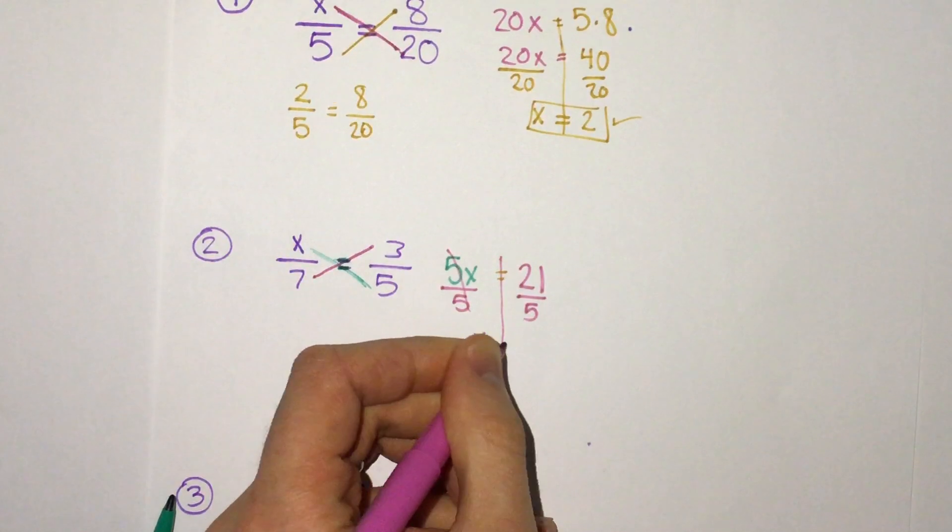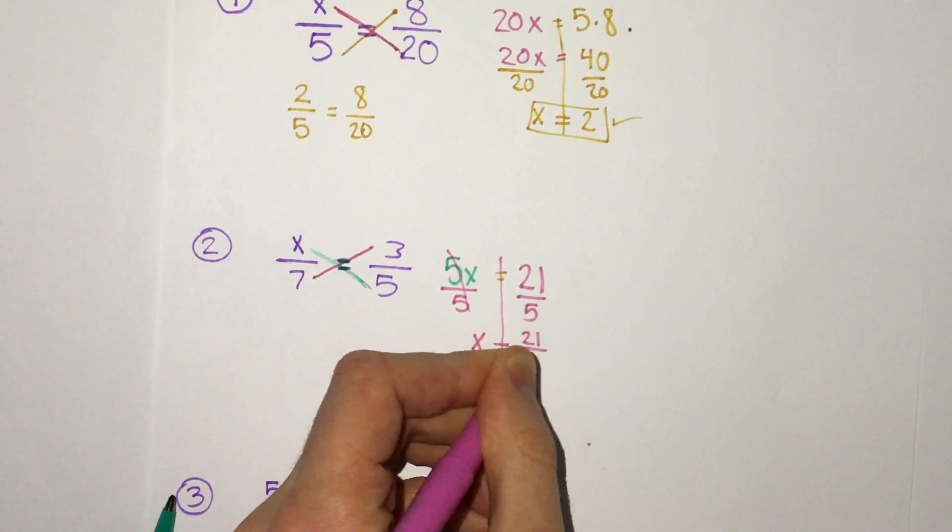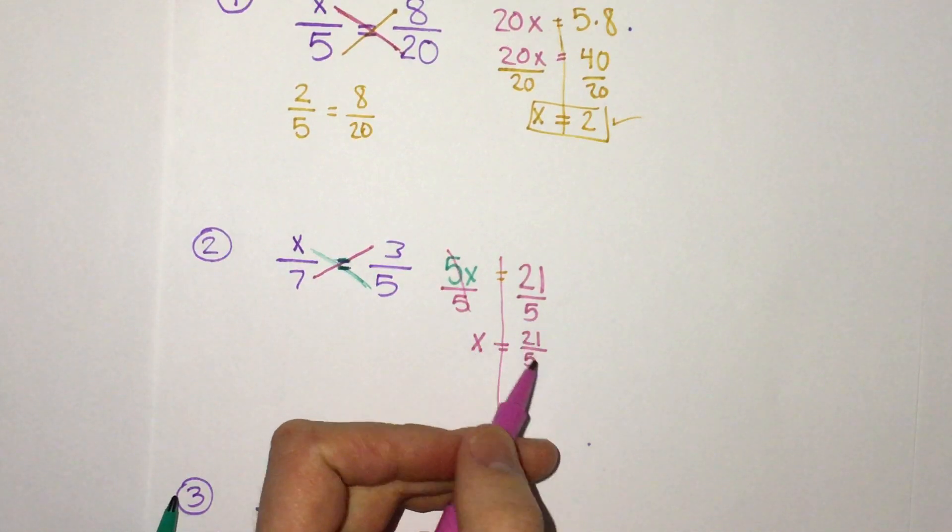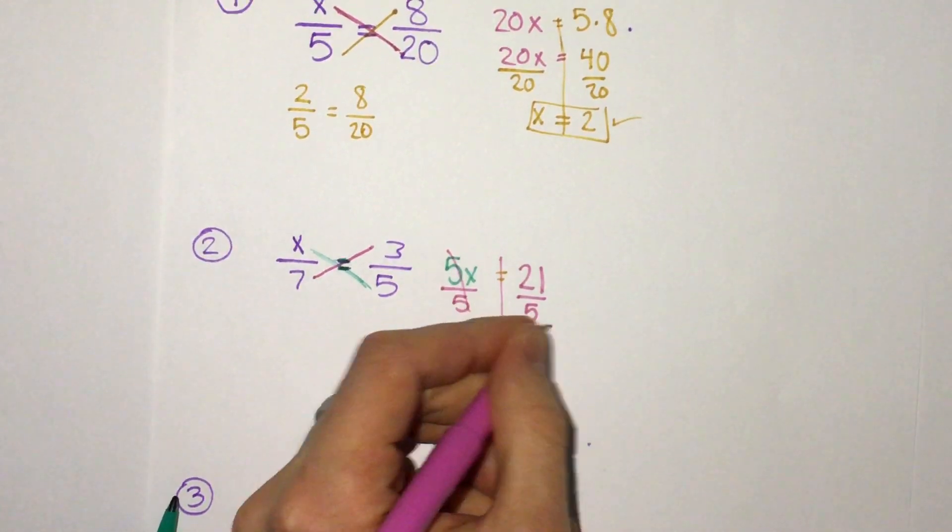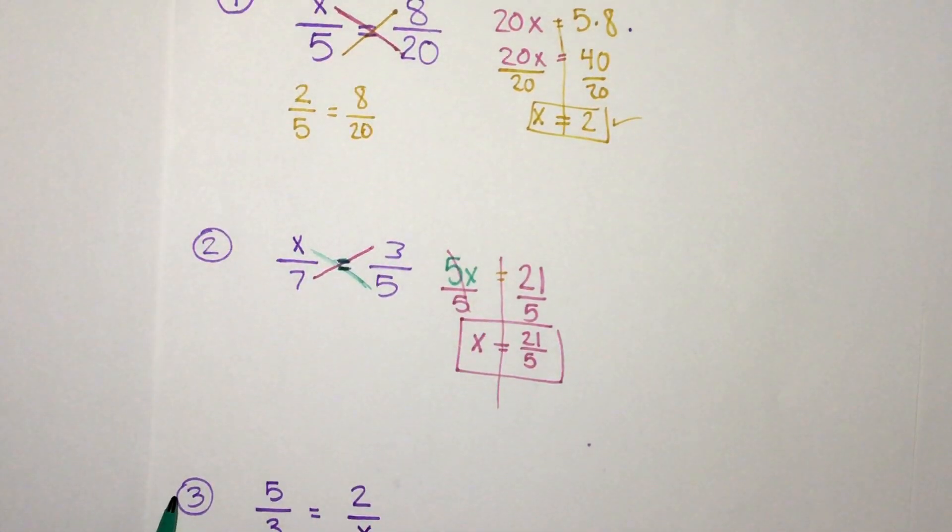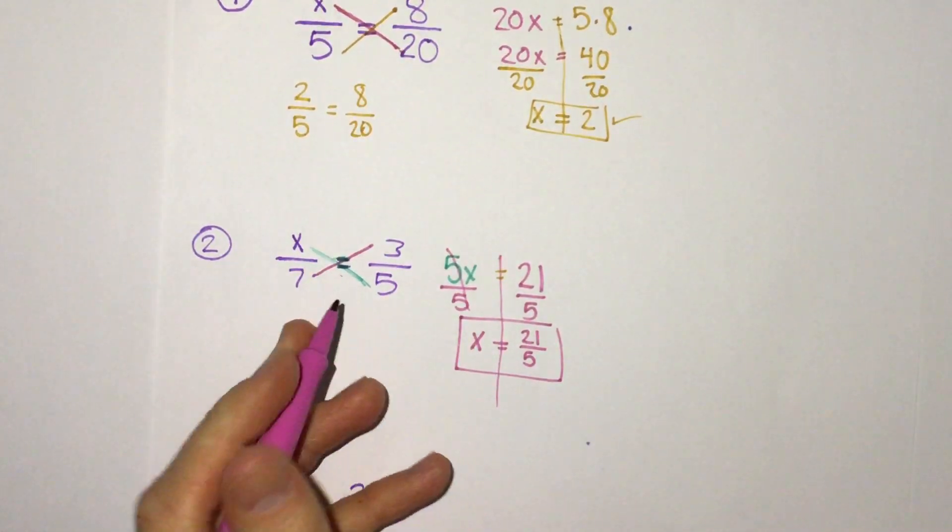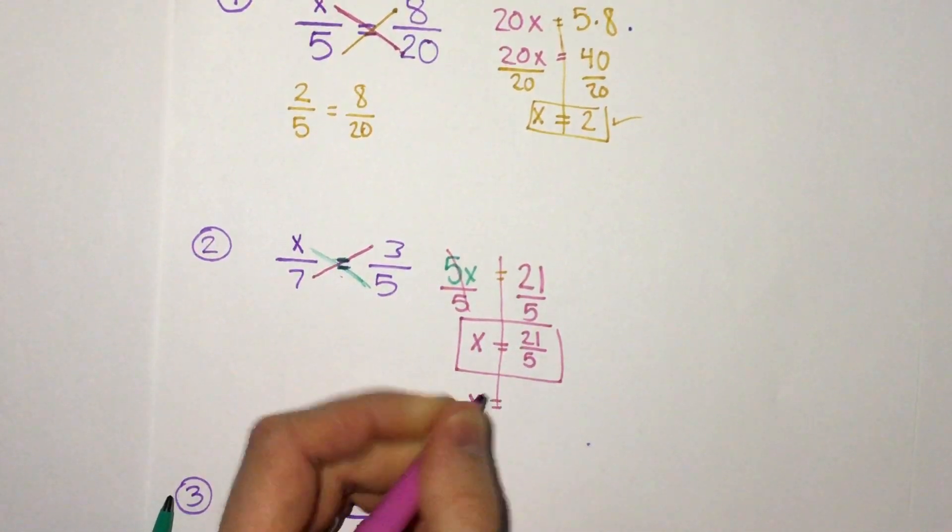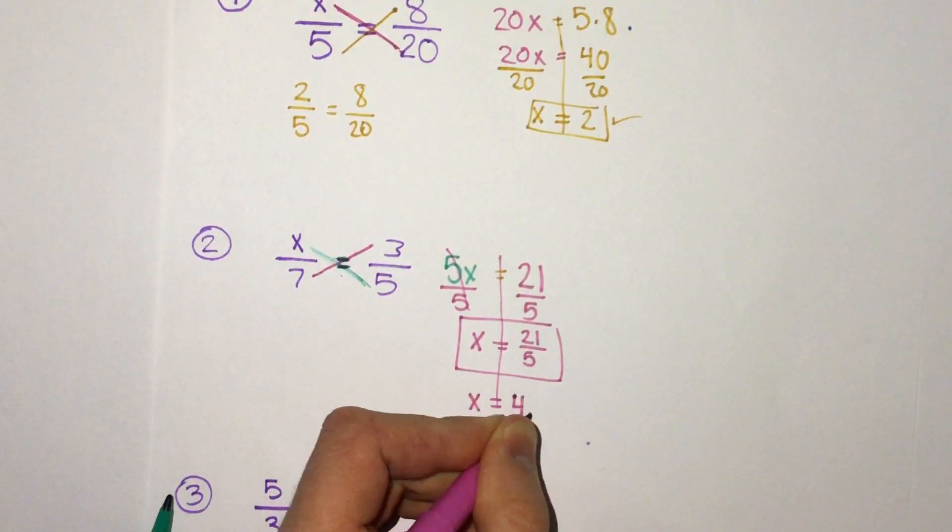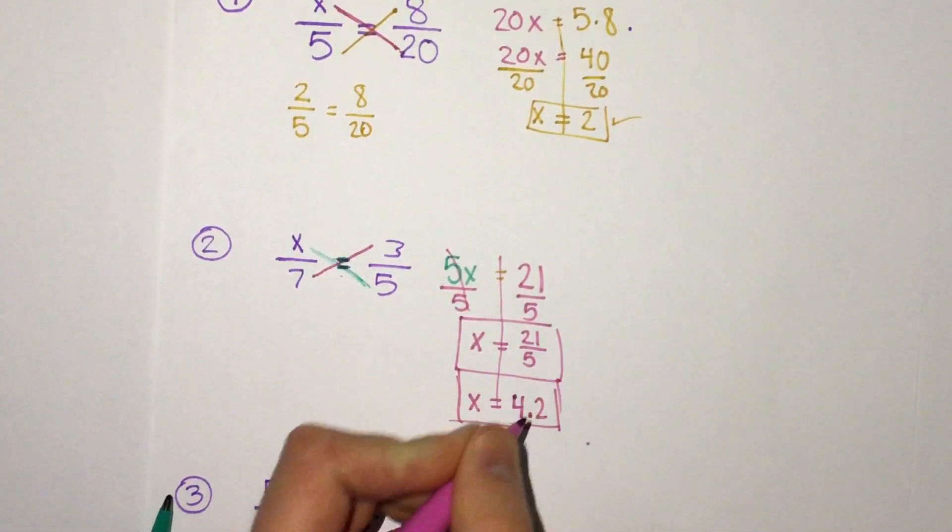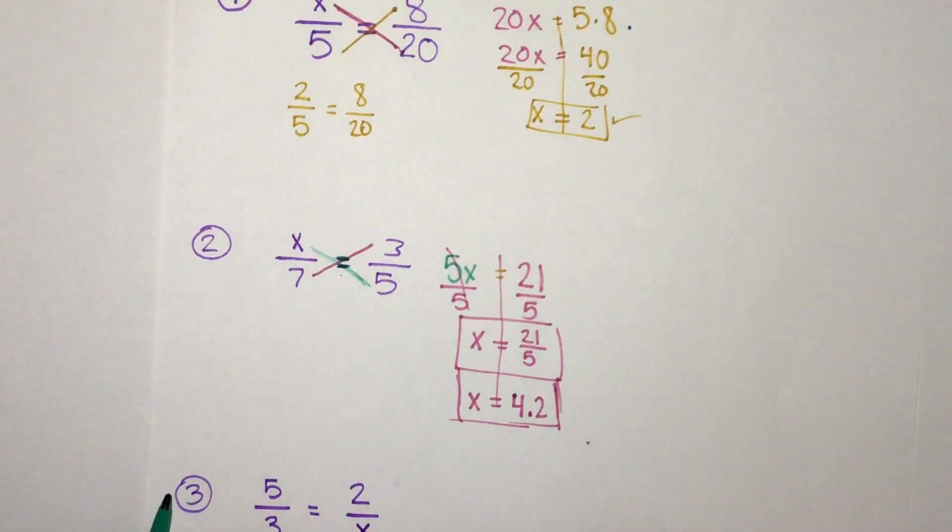And we can divide by 5 on both sides. Divide by 5 gets us x equals 21 fifths. We can reduce that or divide it on the calculator to get the decimal 4.2, but we can also just leave it as 21 fifths. So our answer there for this fraction is 21 fifths. Possibly if we want to check our answer by putting it in the calculator we would want to reduce it to the decimal rather than having a fraction and a fraction, so then it would be x equals 4.2.